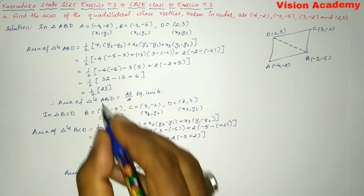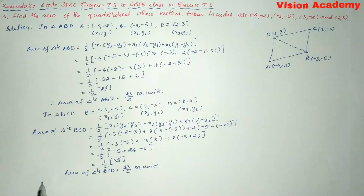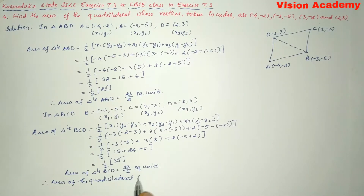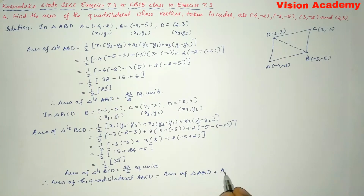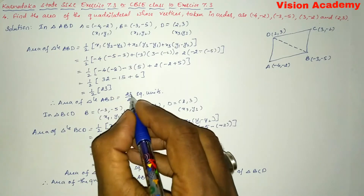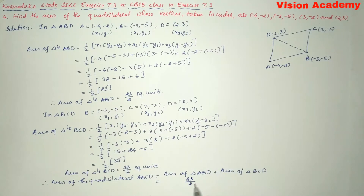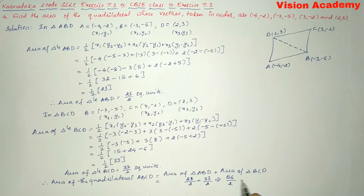Now adding both areas to get the area of the quadrilateral: area of quadrilateral ABCD = area of triangle ABD + area of triangle BCD = 23/2 + 33/2 = 56/2 = 28 square units.